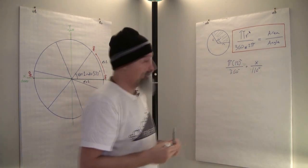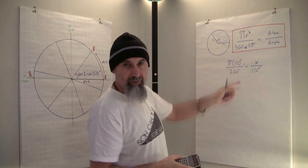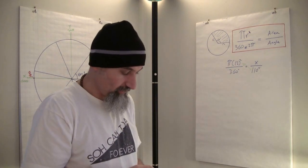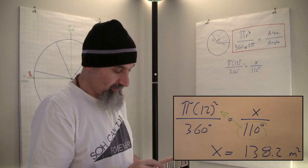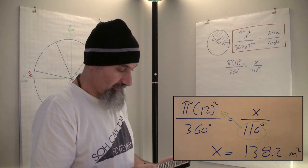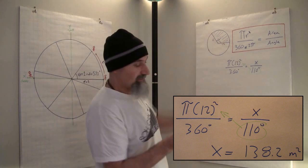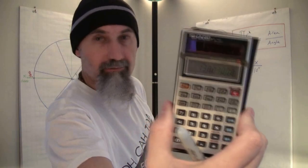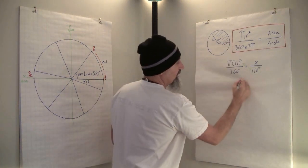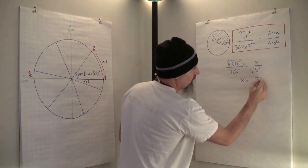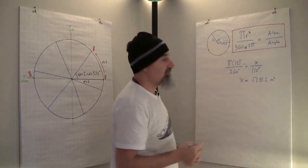Kicking that up: x equals π × 144 × 110 divided by 360. So the area of this segment is 138.2. If the radius was in meters, x equals 138.2 meters squared.